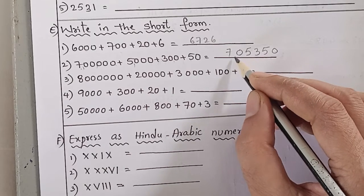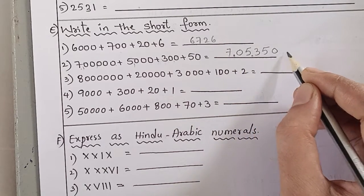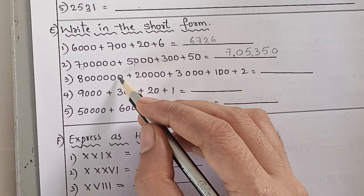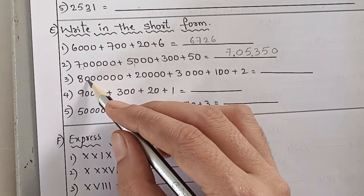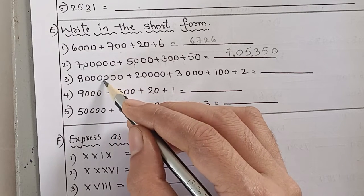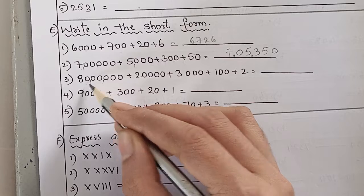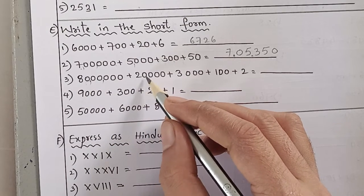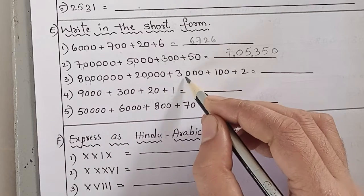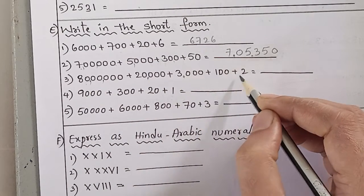Seven lakhs, five thousand, three hundred and fifty. Next number — ones, tens, hundreds, thousands, ten thousands, lakhs, ten lakhs. So: eighty lakhs, twenty thousand, three thousand, one hundred, two.